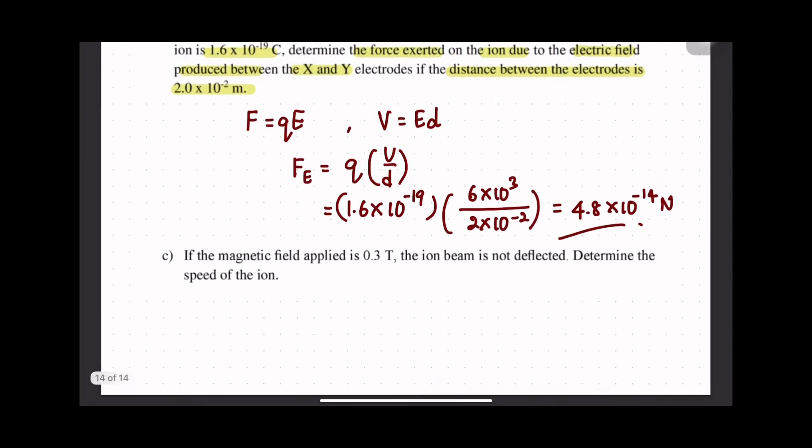Part c: If the magnetic field applied is 0.3 T, the ion beam is not deflected. Determine the speed of the ion. So kita dah tahu not deflected, so kaitan ni mesti FE dan FB.